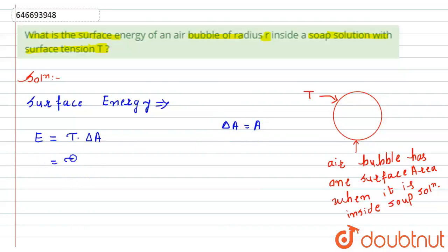So if we substitute here, this will become T into A. Now, this air bubble is a spherical form, and for sphere we know the surface area is given by A equals 4π r squared, where r is the radius.